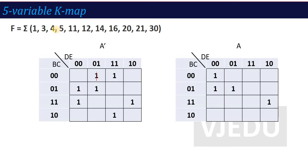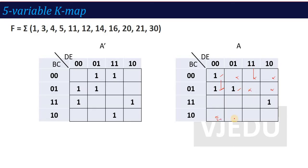Now I will fill in the K-map. Checking each block: 1 is required — yes; 2 not required; 3 required; 4 required; 5 required; 6 and 7 not required; 8, 9, 10 not required; 11 required; 12 required; 13 not required; 14 required; 15 not required — I will leave them blank. In the second K-map: 16 is given; 17, 18, 19 not required; 20 is here; 21 is here; 22 and 23 not required; 24, 25, 27, 28, 29 not required; 30 is here; 31 not required.